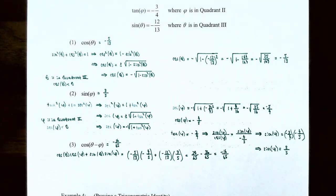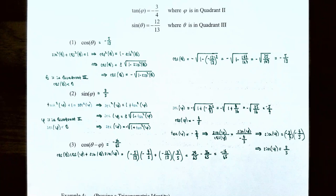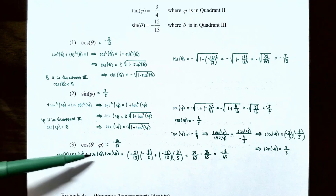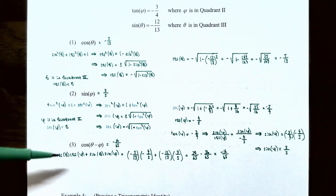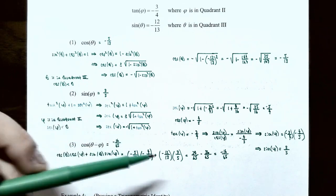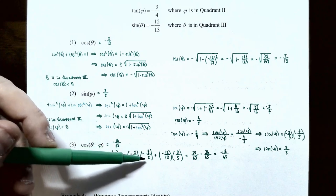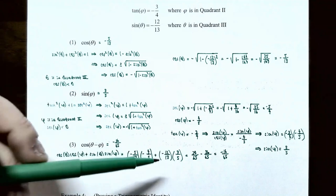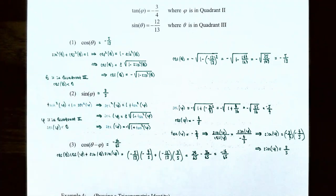Number three: find cosine(θ - φ). Using the difference formula for cosine: cos(θ - φ) = cos(θ)·cos(φ) + sin(θ)·sin(φ). Substituting: cos(θ) = -5/13, cos(φ) = -4/5, sin(θ) = -12/13, sin(φ) = 3/5. So (-5/13)·(-4/5) = 20/65, and (-12/13)·(3/5) = -36/65. The result is 20/65 - 36/65 = -16/65.